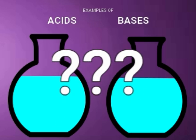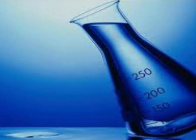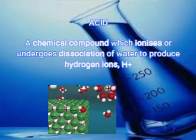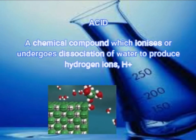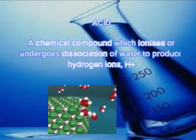But wait, what are acids and bases? Acid can be defined as a chemical compound which ionizes or undergoes dissociation of water to produce hydrogen ions.